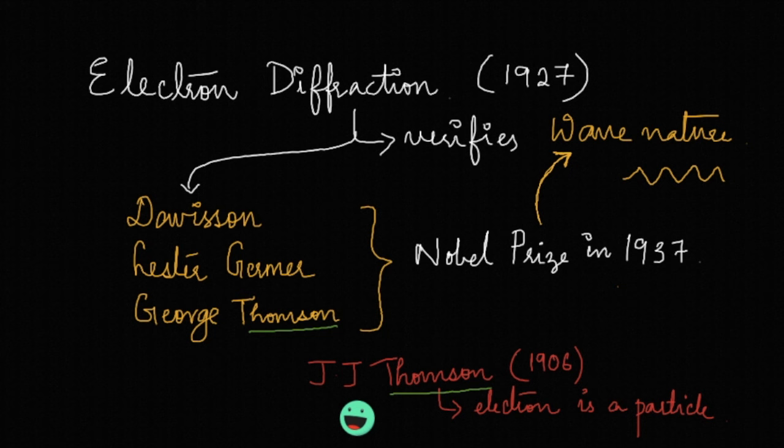We have seen de Broglie hypothesized that a wave called matter wave is associated with the particle, and a critical experiment to verify the wave-like properties of particles like electrons was done by Davison, Lester Germer, and George Thompson in 1927. They were awarded the Nobel Prize in Physics in 1937.